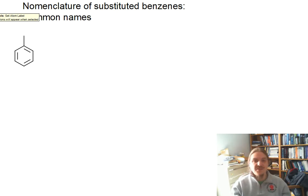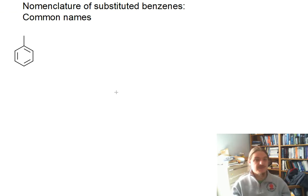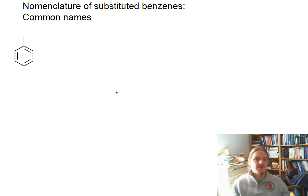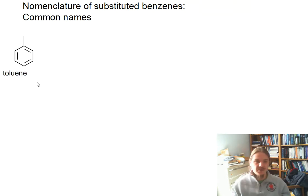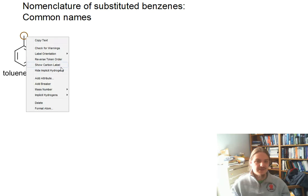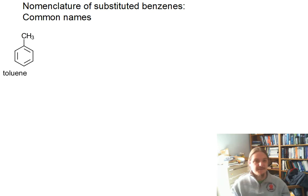Hello. In this video, I'm going to talk about the common names of some substituted benzenes. These common names have survived and serve sometimes as the parent names for more complicated aromatic compounds. I'm going to start with toluene. Toluene is the common name for methylbenzene.